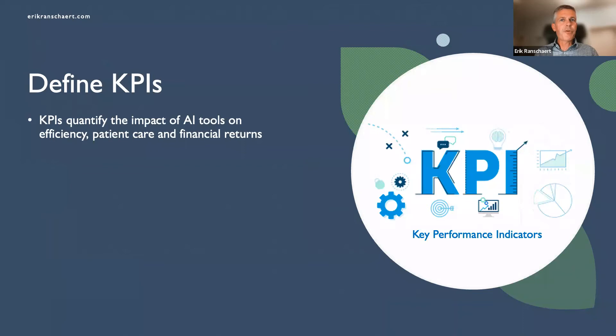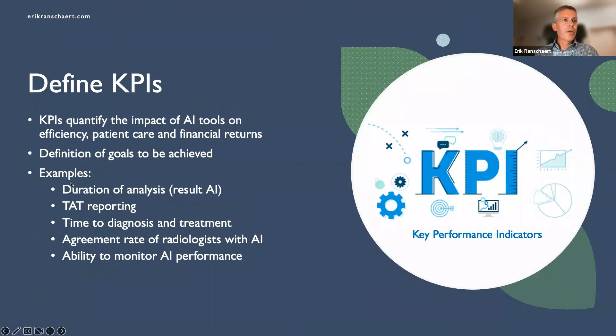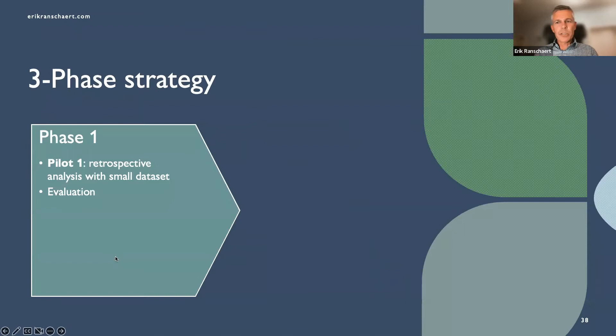An important element is defining KPIs — key performance indicators — because they quantify the impact of AI tools on efficiency, patient care, and financial returns. You have to think about what goals you want to achieve. For example: reducing reporting duration, reducing time between diagnosis and treatment, evaluating the radiologist agreement rate with AI suggestions, and monitoring AI performance.